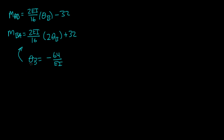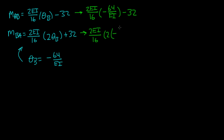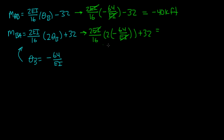Plugging theta_B into M_AB: 2EI over 16 times (negative 64 over EI) minus 32. The EI terms cancel, giving 2 times negative 64 over 16 minus 32, which equals negative 40 kip·foot. And for M_BA: 2EI over 16 times 2 times (negative 64 over EI) plus 32. The 2EI also cancels, giving 2 times 2 times negative 64 over 16 plus 32, which equals 16 kip·foot.